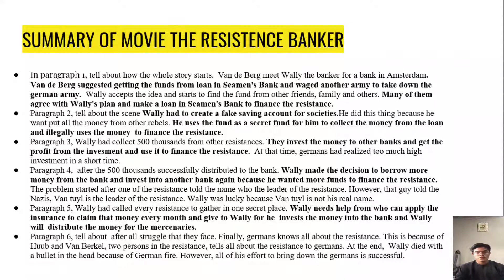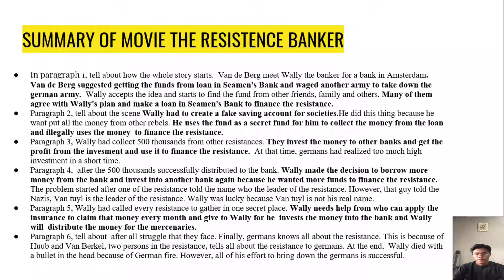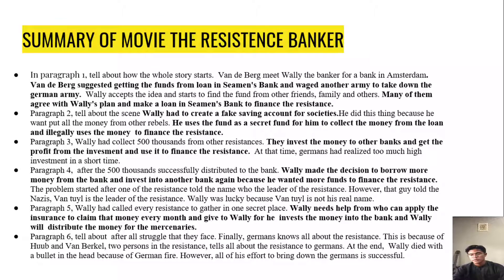My name is Muhammad Amir Syahmi bin Jusof. I will explain a little bit about my summary in the report. The movie name is The Resistance Banker. In paragraph 1, I talked about how the whole story starts. Wally is one of the bankers of Amsterdam. When it was suggested to get funds from a loan to finance another army to take down the German army, Wally accepted the idea and started finding funds from friends, family and others. Many of them agreed and made loans to finance the resistance.